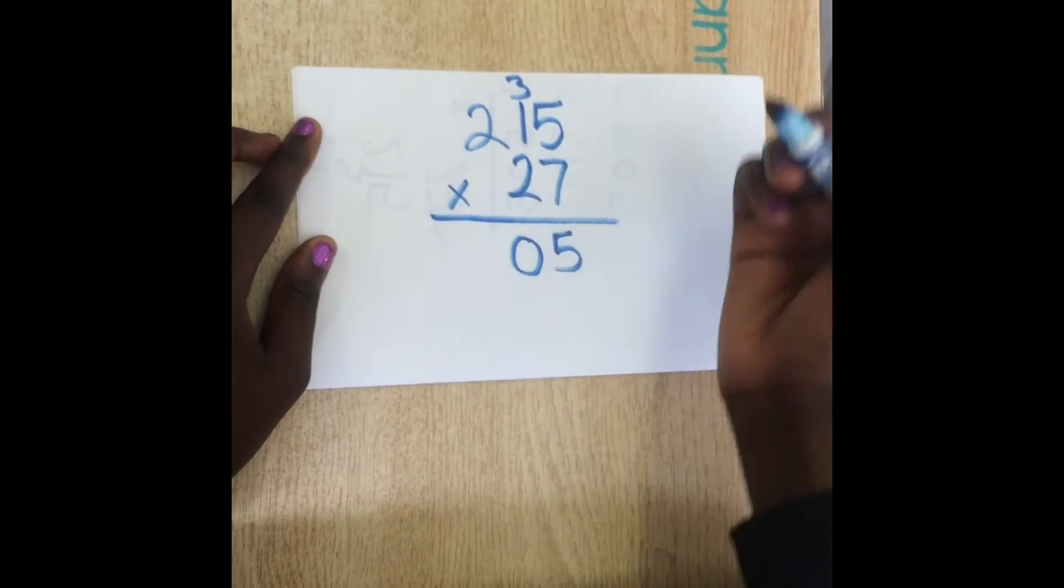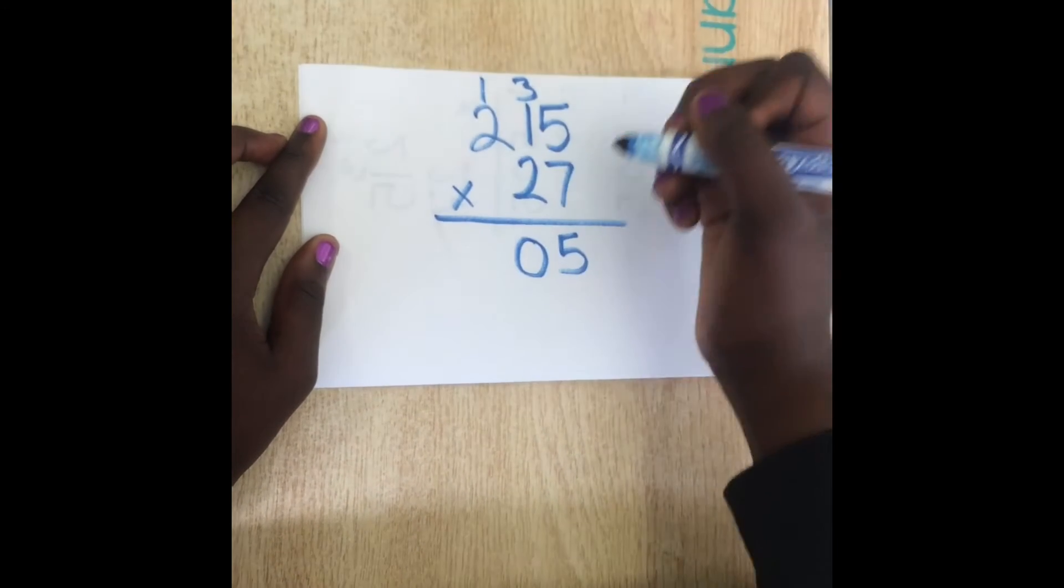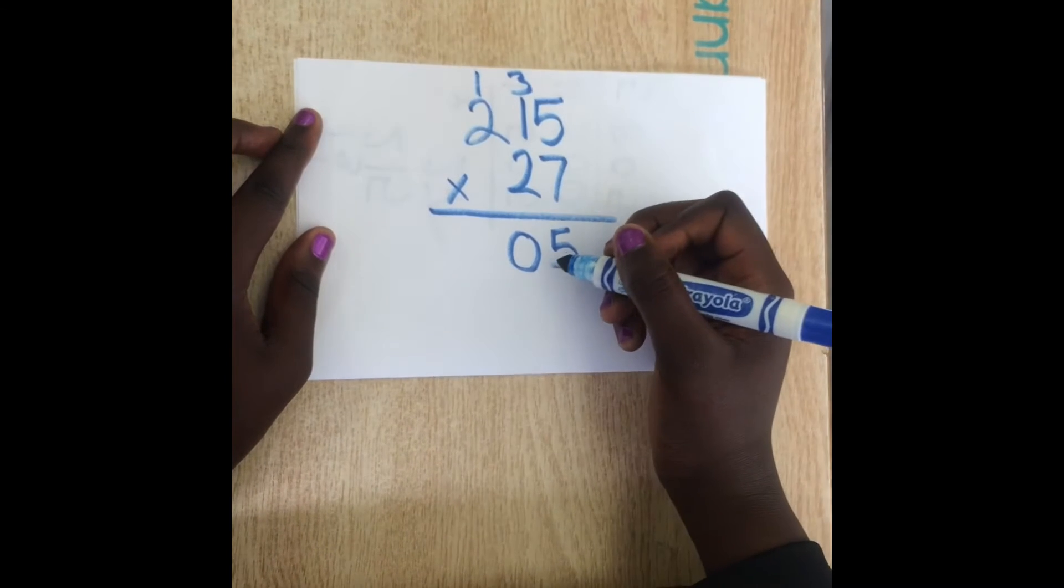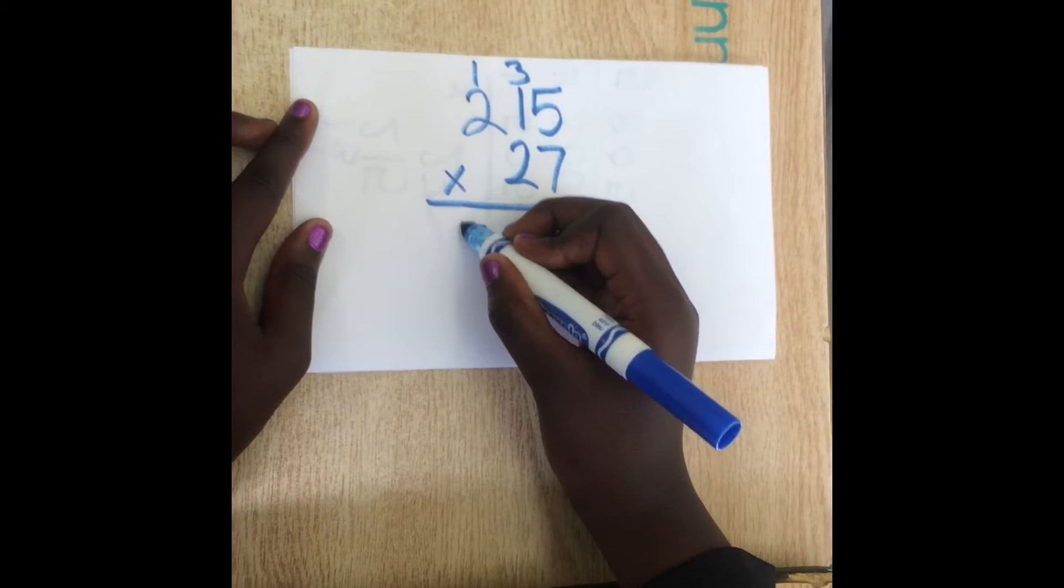Then you do 7 times 1 which gives you 7 plus the 3 that gives you 10. You put the 0 under the 2 and the 1 over the 2.